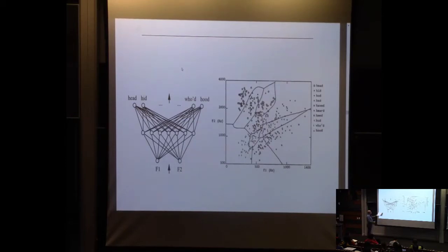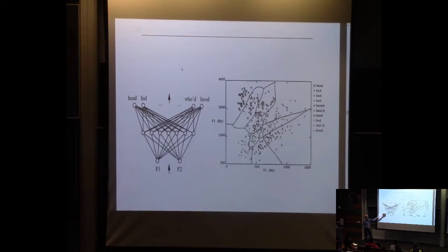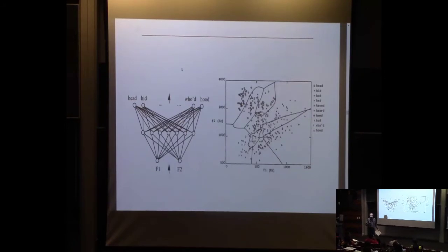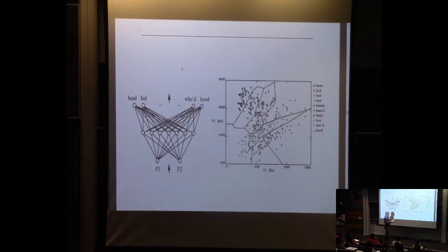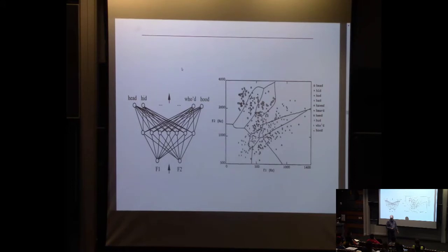It's a single hidden layer network with seven units, and ten outputs corresponding to categories — winner-take-all categories for the different vowels, like the e in 'head,' the e in 'hid,' the o in 'hod,' and so forth. The network was trained on a large number of examples using backpropagation. Once trained and frozen, to map what the network does, we drew the two formants in hertz — first formant and second formant — and for every training example, we took its formant representation and placed it on a 2D plot with a symbol indicating its correct label.